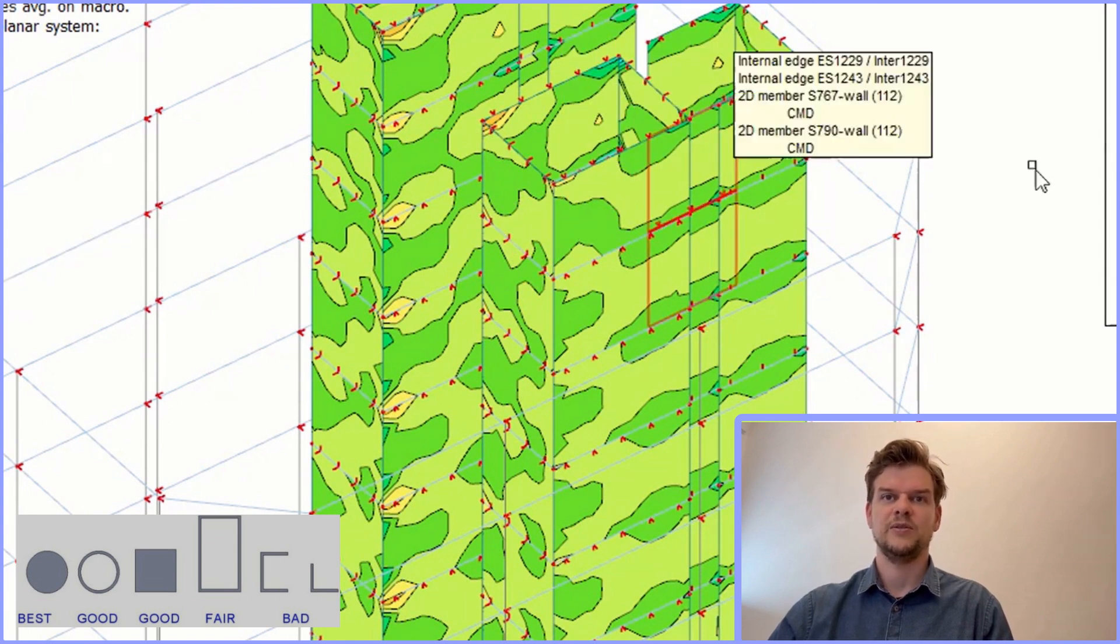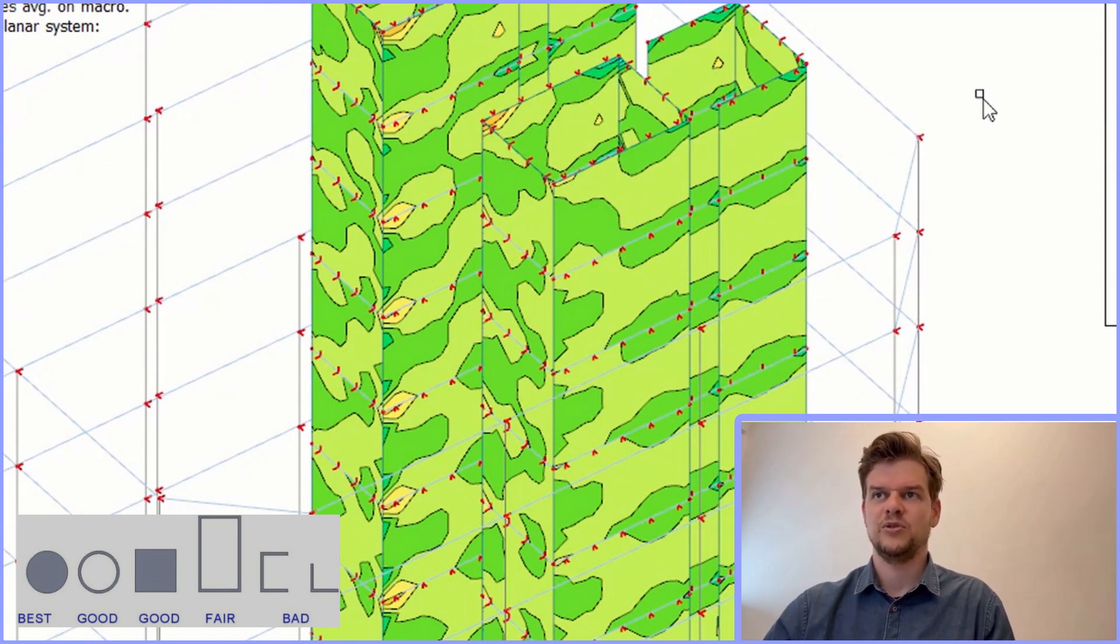In the image on the left, I've highlighted which core shapes are structurally favorable and which ones are not.